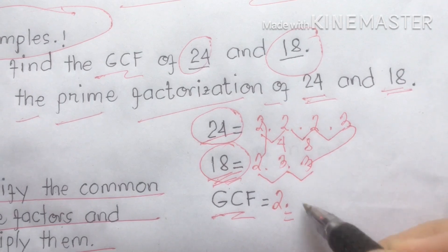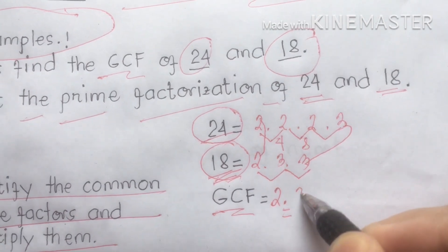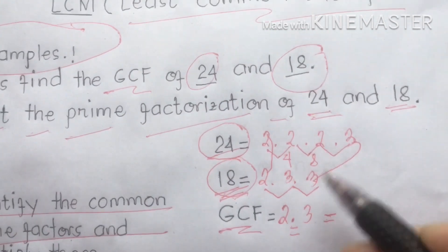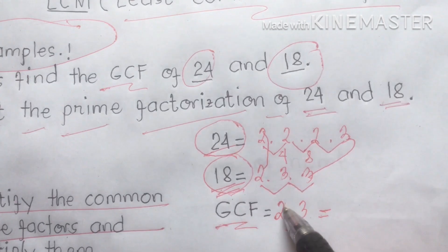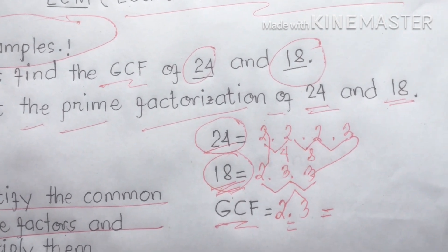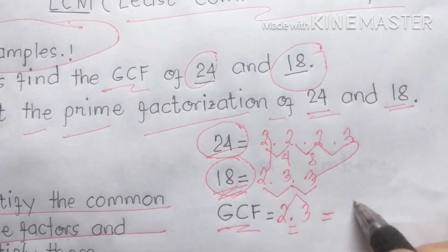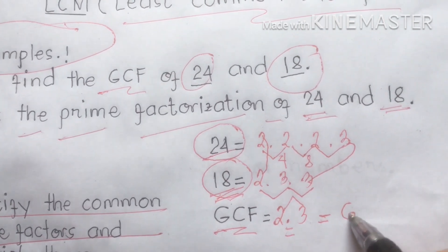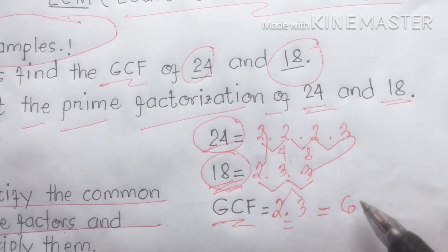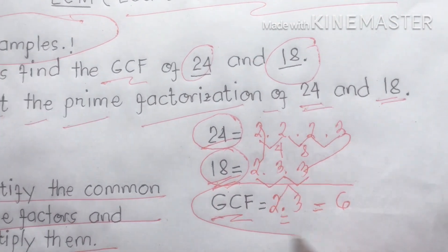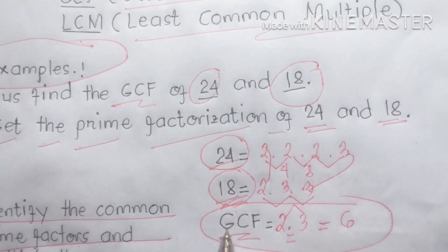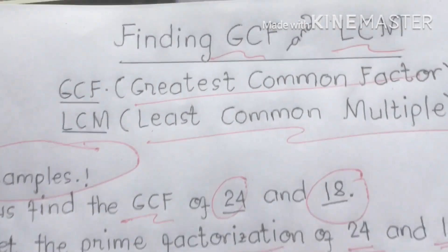We jot down the common prime factors — we have 2 and 3. Then we multiply them: 2 times 3 equals 6. Six is what we call our Greatest Common Factor, or GCF.